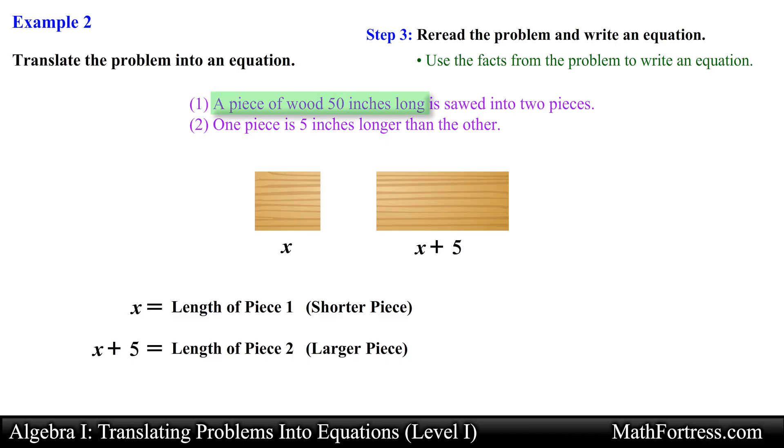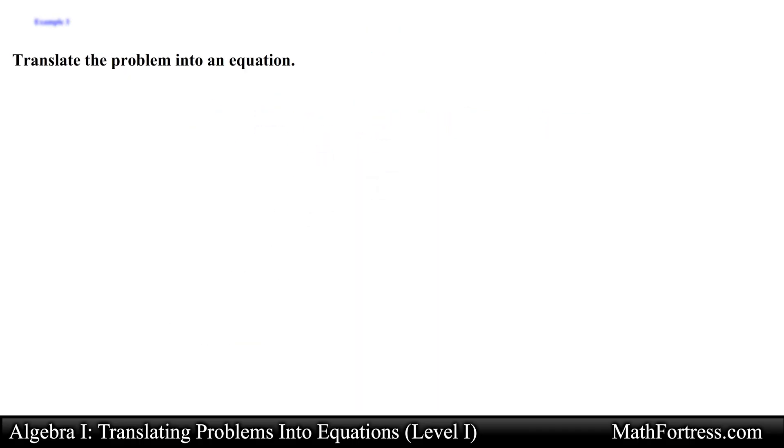From the first sentence we know that the original length of this piece of wood was 50 inches. This means that if we were to add the smaller and larger piece it should equal 50 inches. So we go ahead and add the shortest piece x with the longest piece x plus 5 and set it equal to 50 as follows. So our final answer is x plus the quantity x plus 5 equals 50 and this is our equation. Alright let's try the final example.